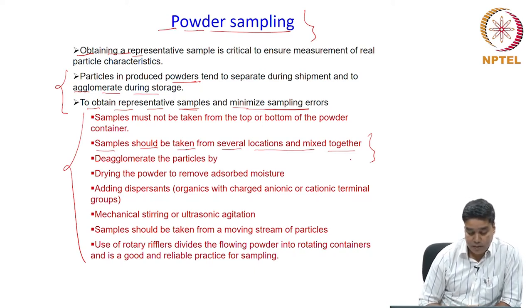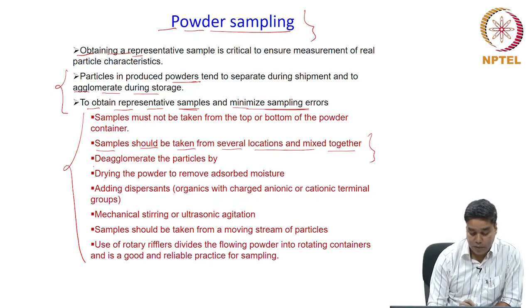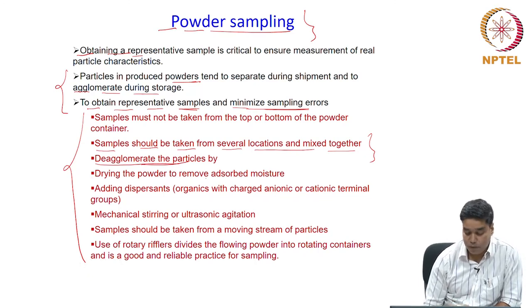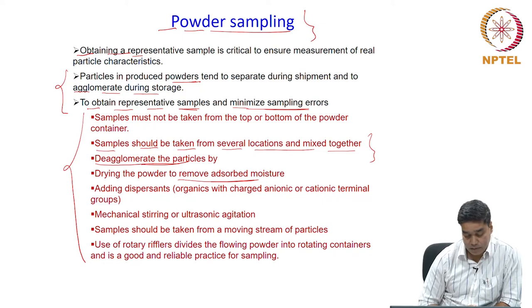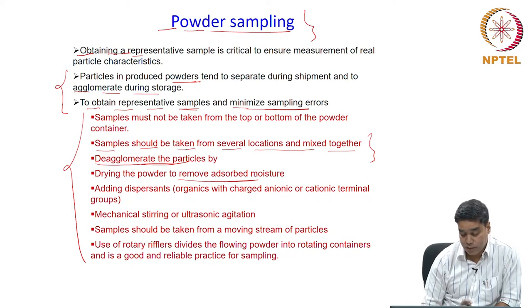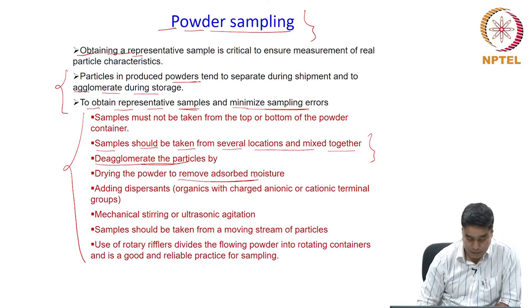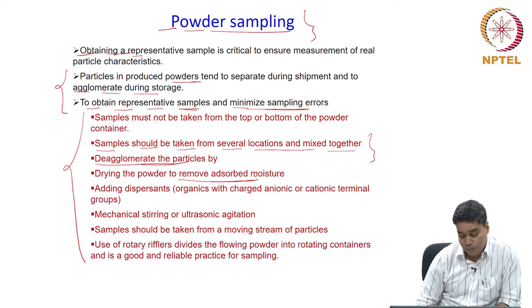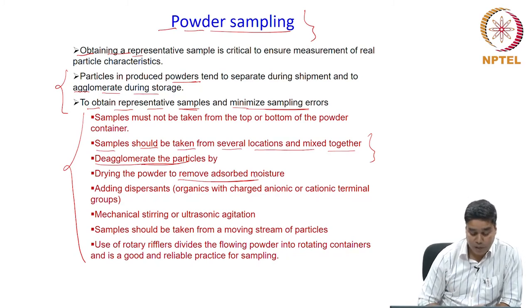Since there are chances of agglomeration during shipment and storage, it is always good to de-agglomerate the particles by processes such as drying the powder to remove moisture. One of the major causes of particle agglomeration is moisture, which acts like a glue between the particles and makes them stick together. When this moisture is removed by drying, the particles will tend to separate and the powder sample can be de-agglomerated.